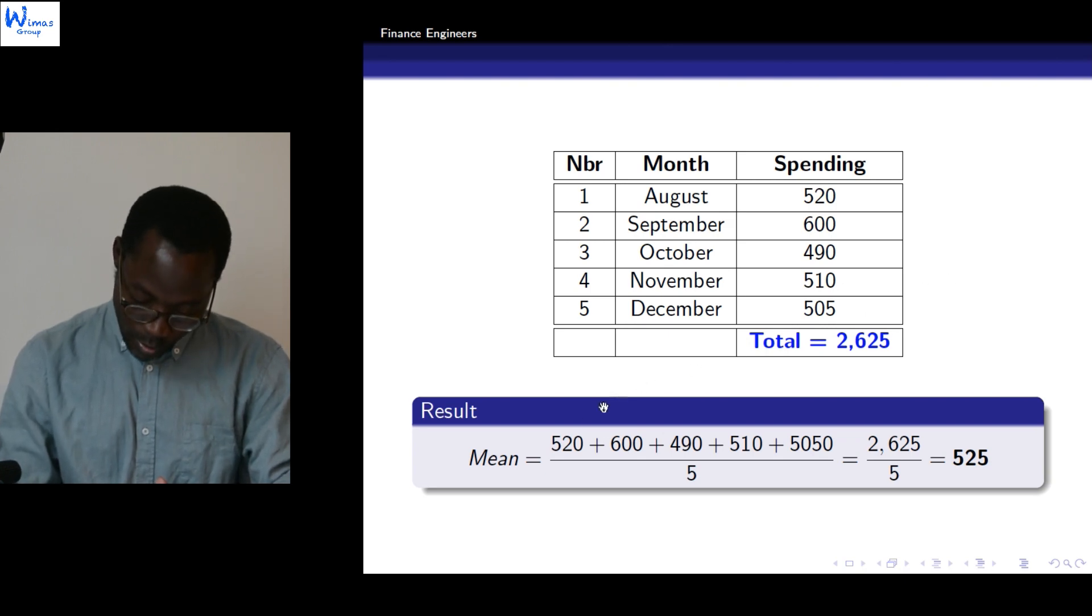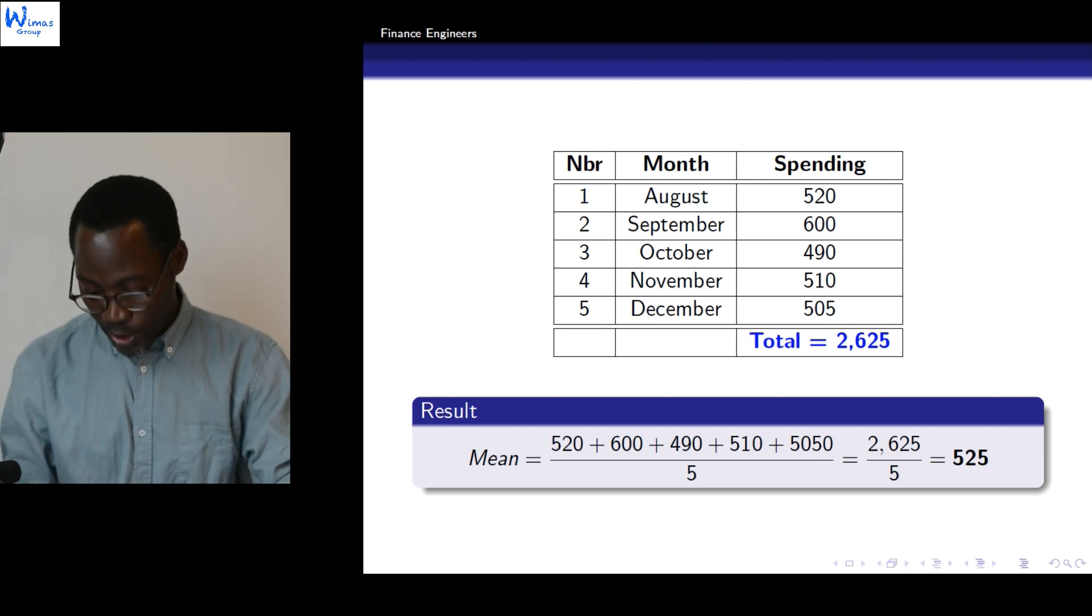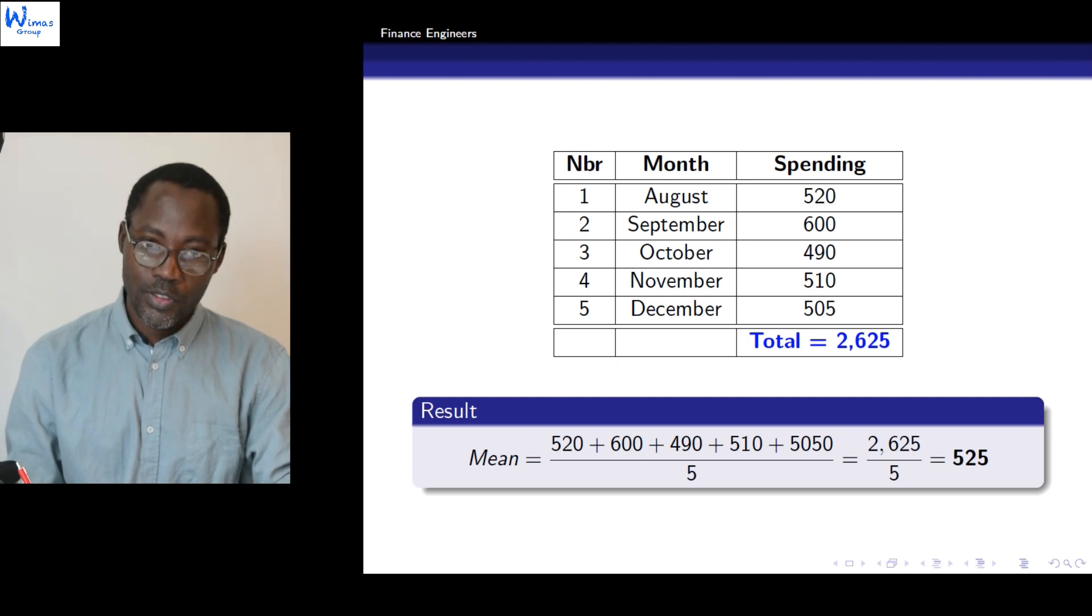So the mean of these five observations is just the sum of all of them divided by five, because we have only five observations. The sum is 2,625 divided by five. So on average he has spent 525.